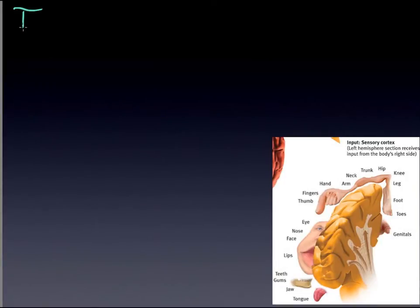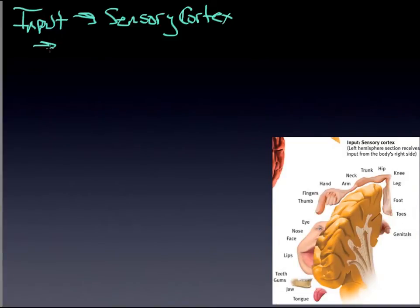It makes sense to start with the one that has to do with input first, and input is always the sensory cortex. It is the interface between the senses and the brain, so it processes incoming information. It acts as the interface between the senses and the brain.